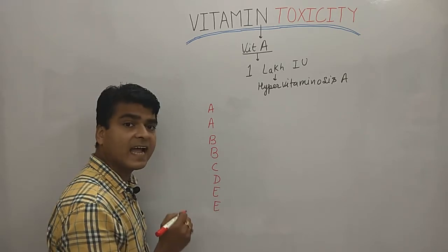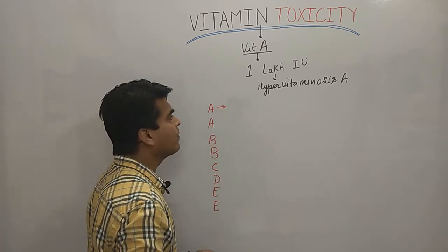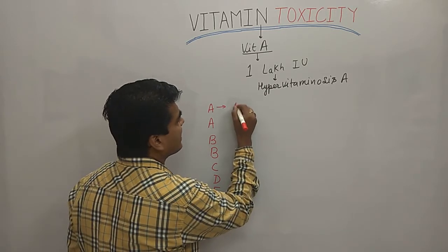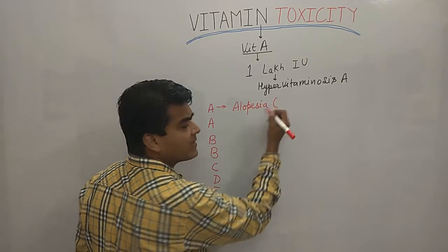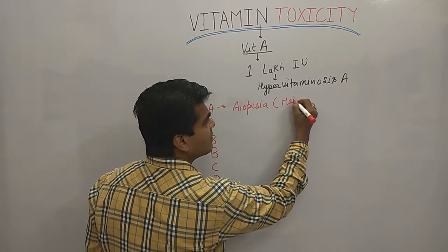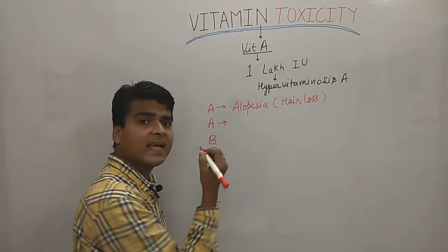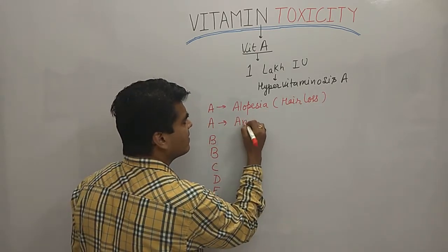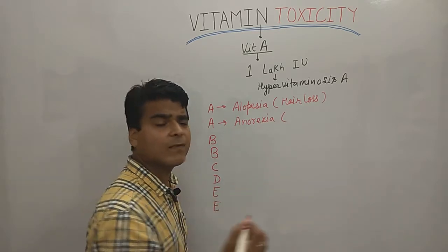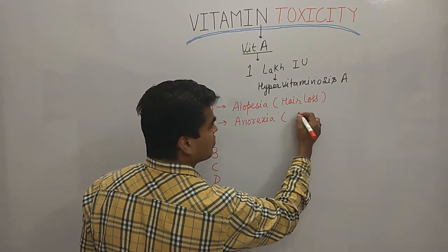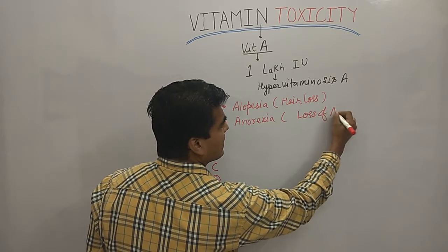The first A stands for alopecia — basically hair loss. The second A stands for anorexia, which means loss of appetite. Both are associated with hypervitaminosis A.